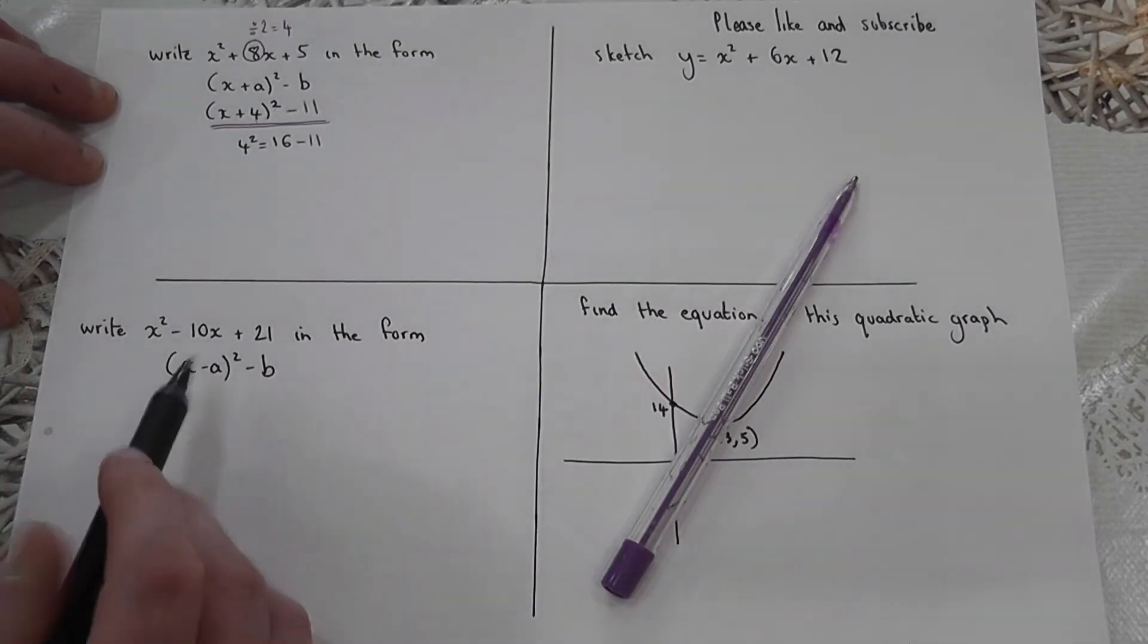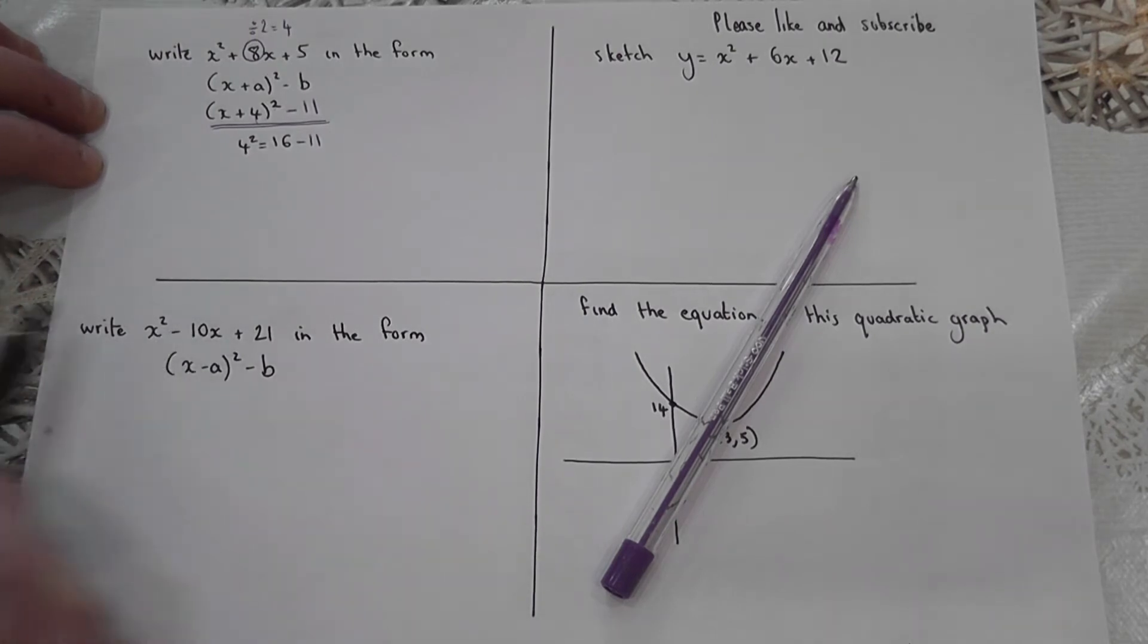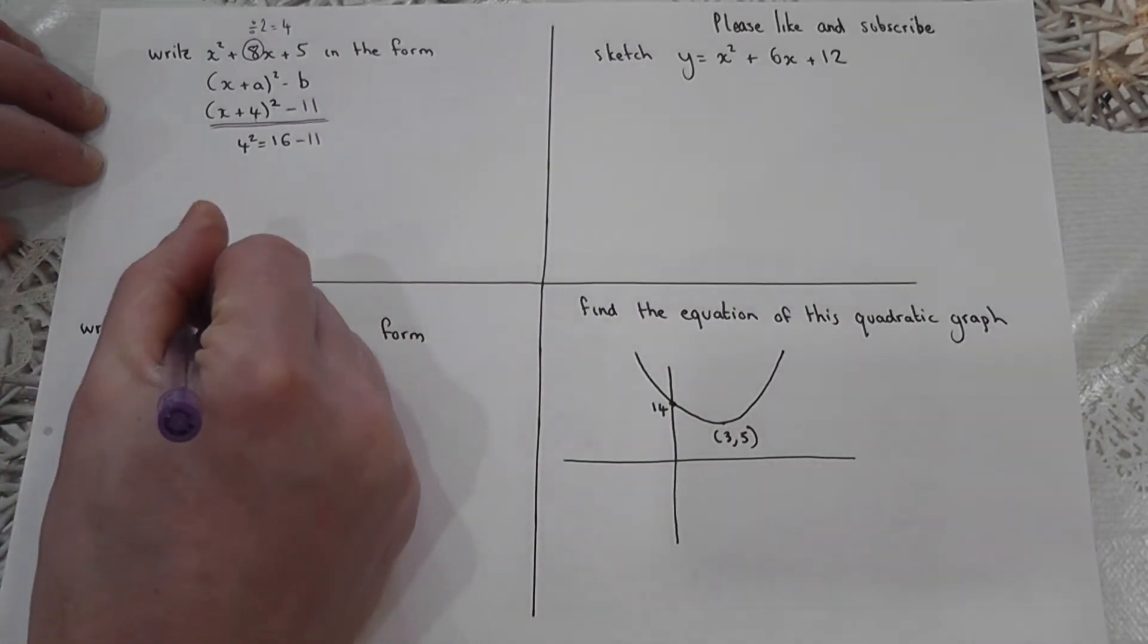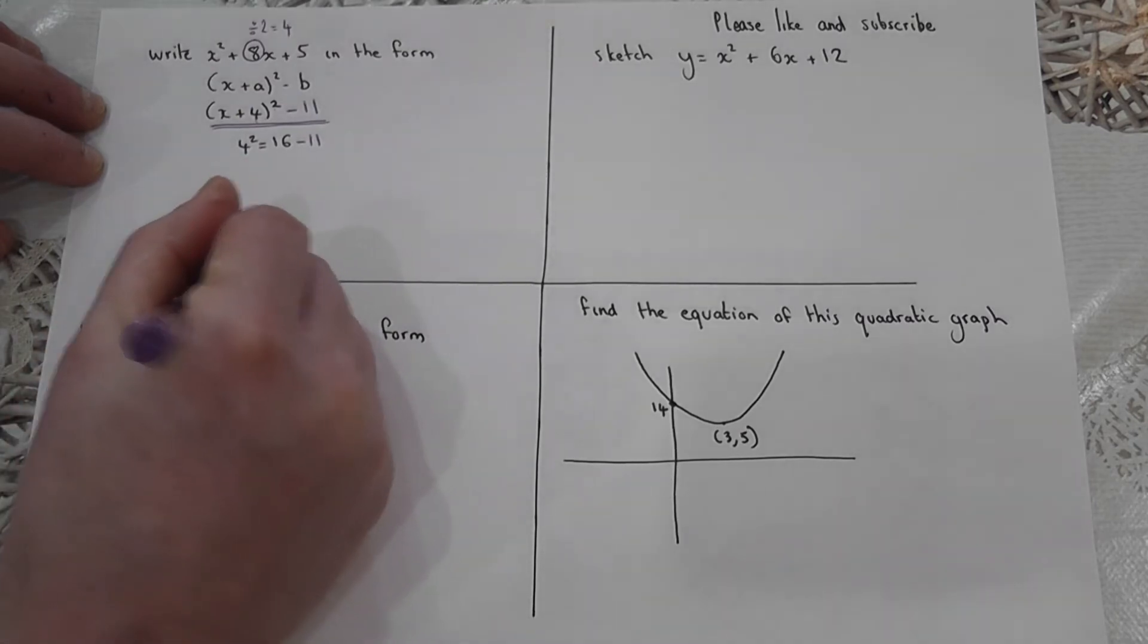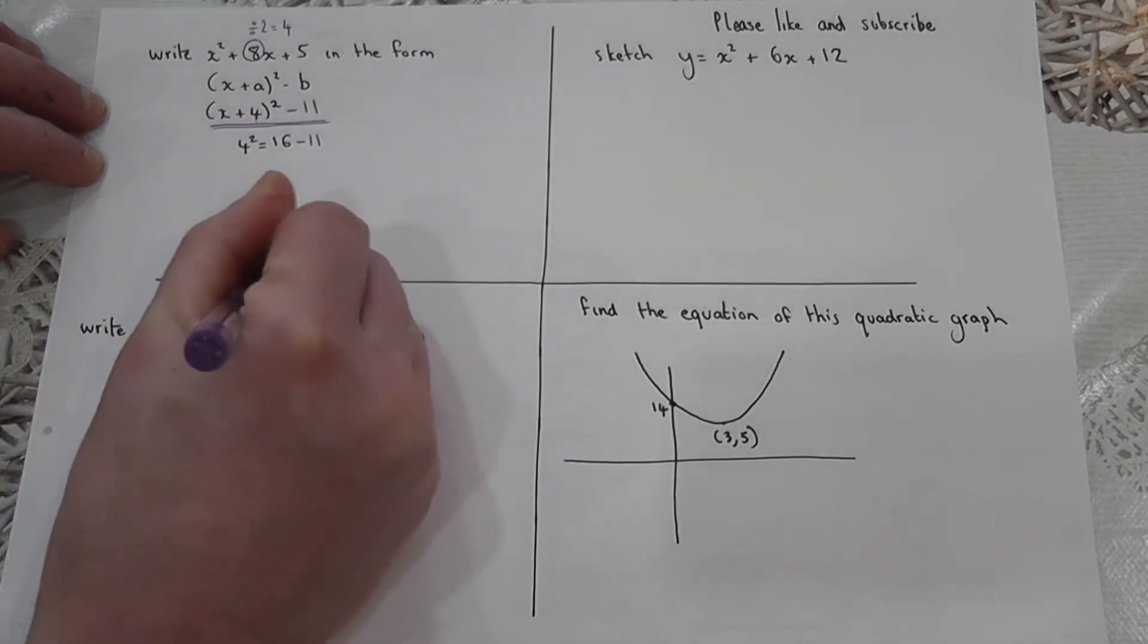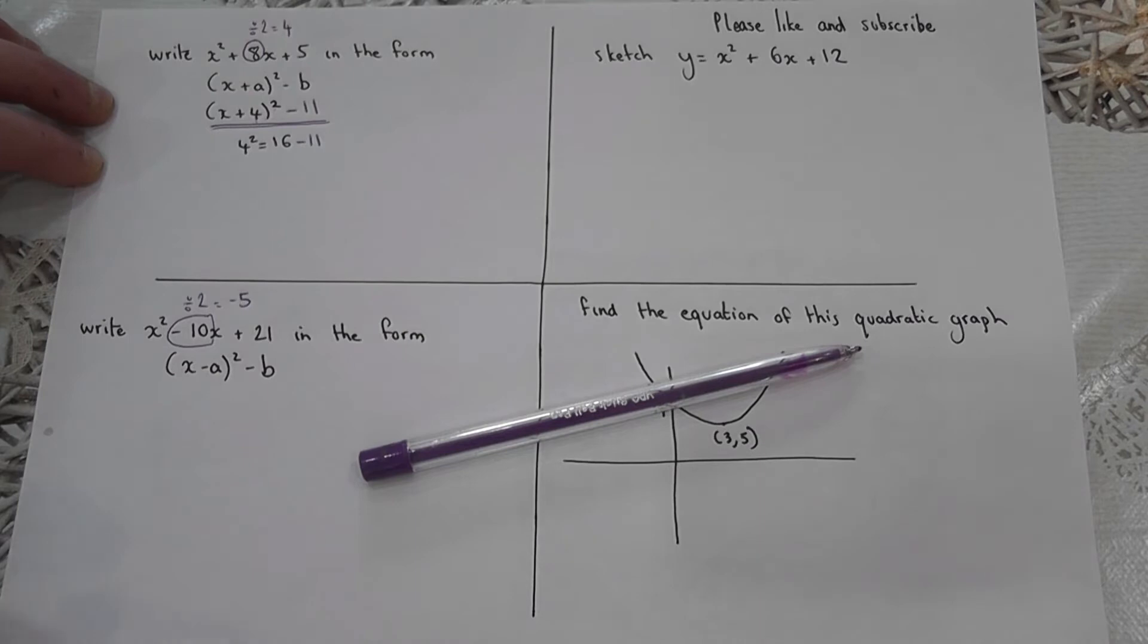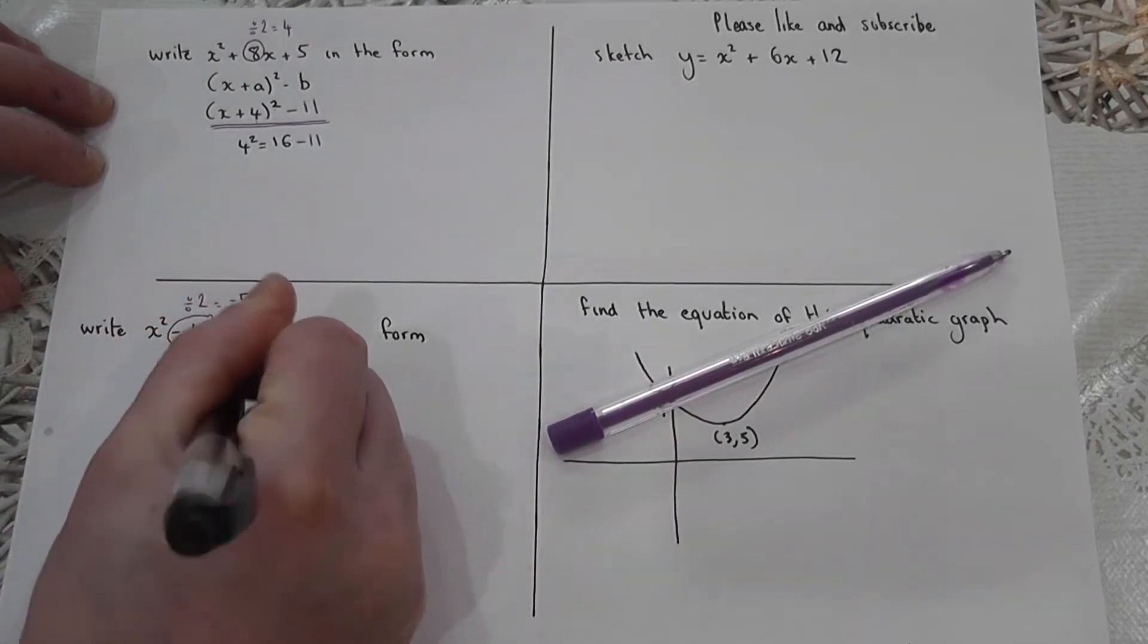The second one is very similar, but it's a negative 10 here. This obeys the same rule. To get the a, we always halve that, but a half of negative 10 divided by two is negative five. So rather than a plus four or a plus five, there's going to be a negative five in the bracket. This will be x minus five squared.